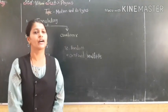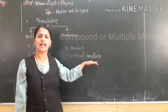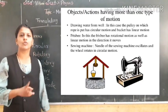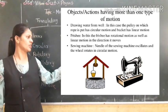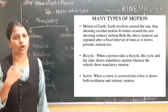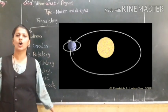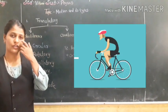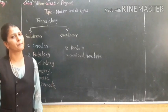The last type of motion is compound motion, also called multiple motion. When an object performs two or more motions together, that is called compound motion. For example, the Earth both rotates and revolves around the Sun. Also, when cycling, the wheels of the bicycle move in a circular path and also move forward — that is compound or multiple motion.